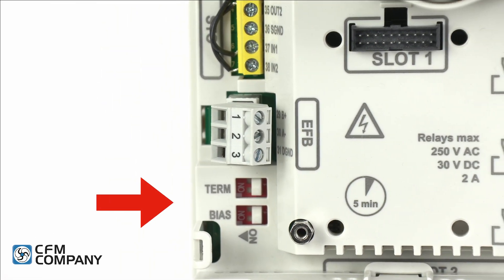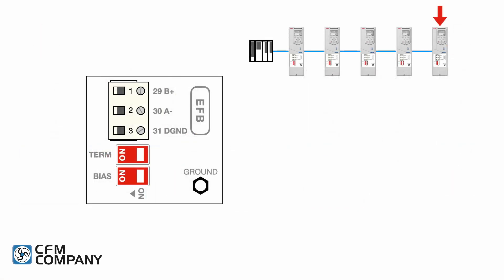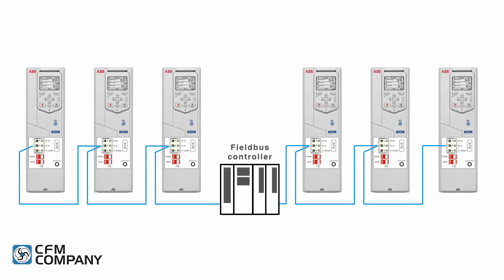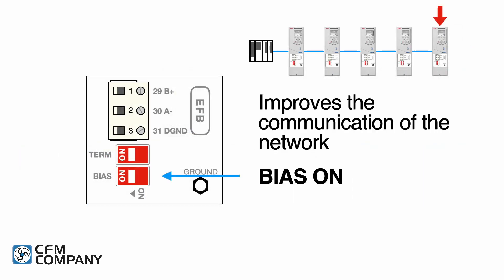Terminate the shield only at the ground terminal in the building automation controller. The ACH 580 includes both a termination switch and a bias switch below the EFB terminal. If the drive is at either end of the network, set the termination switch on — this adds an end-of-line 120 ohm resistor to the end of the network. One device, preferably at either end of the network, must have the bias switch on. The bias switch can help improve the communication of the network.